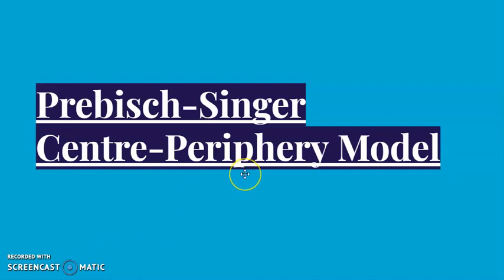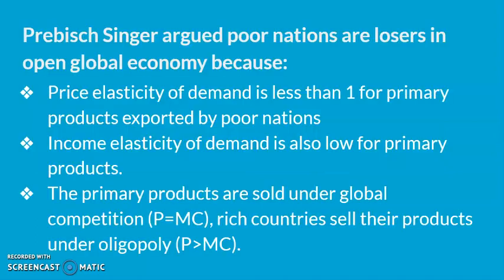Today we'll discuss the Prebisch center-periphery model. They argued that poor nations are losers in an open global economy.